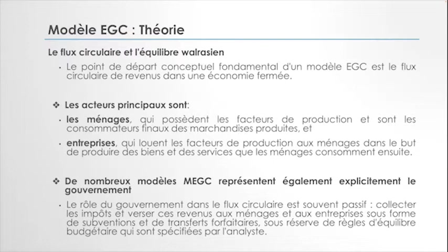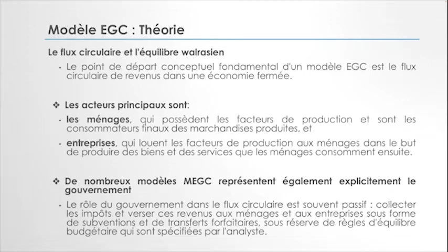En ce qui concerne les modèles d'équilibre général, la théorie, le flux circulaire et l'équilibre walrasien : le point de départ conceptuel d'un modèle est le flux circulaire de revenu dans une économie. Dans une économie, nous avons le marché de l'emploi et la production et la vente de biens et services. Nous avons des salariés qui fournissent les facteurs de production pour produire des biens, et en contrepartie des revenus leur sont octroyés. Ces revenus sont utilisés sur le marché pour acheter des biens et services.